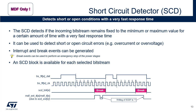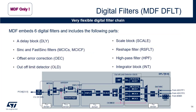The figure shows an example where interrupts and break events are generated if the incoming bitstream remains fixed to the same value for more than 5 bitstream clock cycles. The MDF digital filter embeds several blocks offering great flexibility in filter configuration. The most important parts are the data source selector, the delay block, the main cascaded integrator comb or CIC filter — often called MCIC — the auxiliary CIC filter, often called the ACIC. This filter is included in a function called out-of-limit detector or OLD. An offset error correction, a gain adjust called Scale, a reshape filter called RSFLT, a high-pass filter called HPF, a discard function, and an integrator called INT.